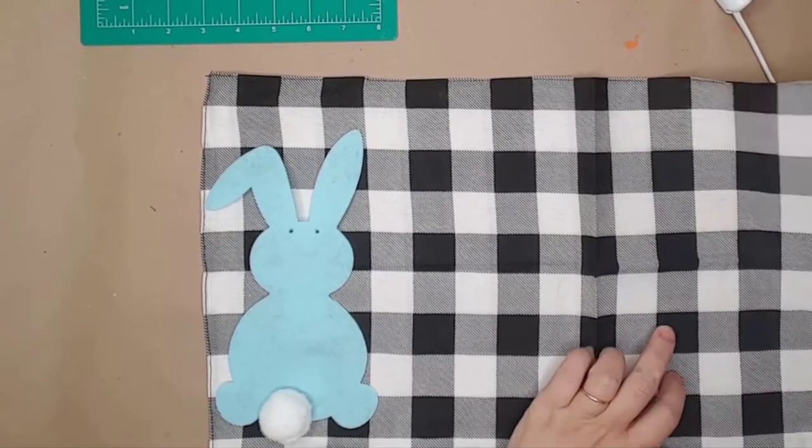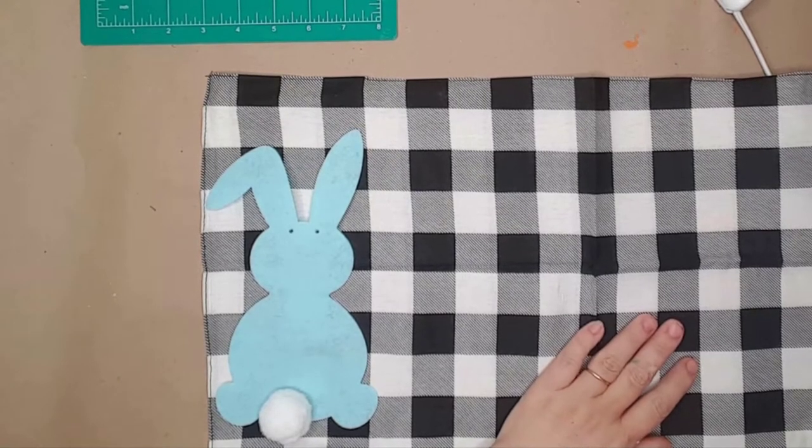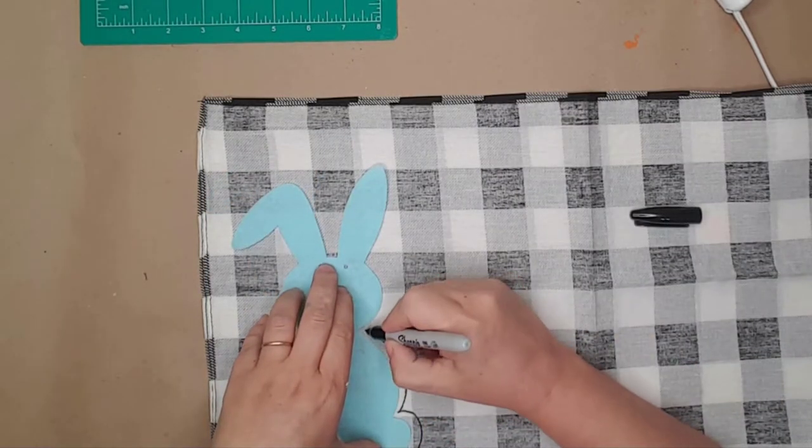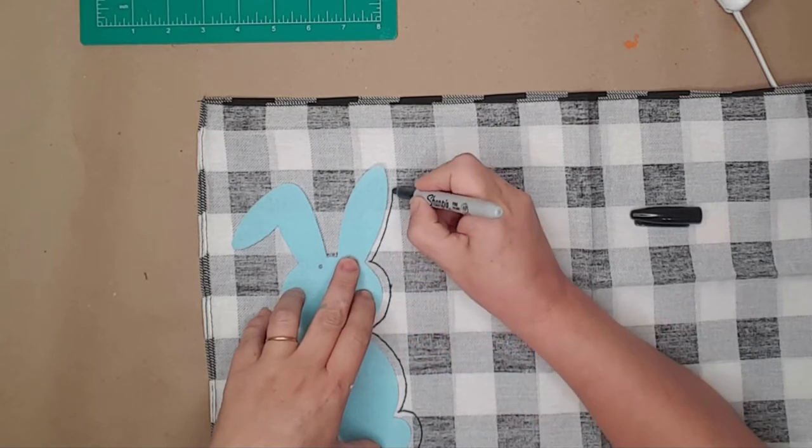Today I'm making this adorable fabric bunny using a buffalo print bandana I got for 99 cents from Hobby Lobby this past weekend. I had this little bunny cut out that I used as a template. With a black Sharpie I traced the bunny on the back of the fabric.